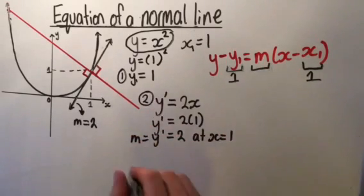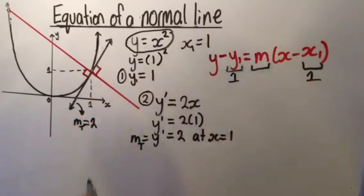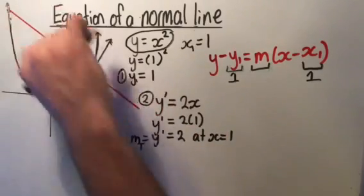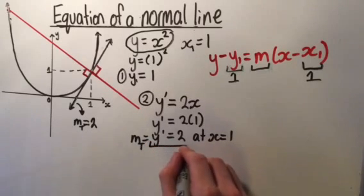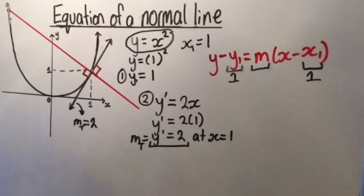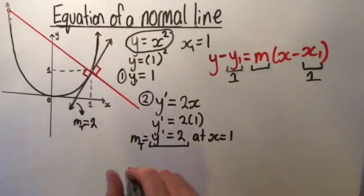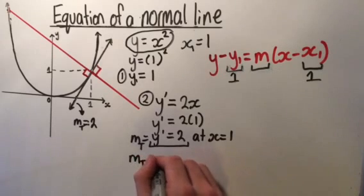But this is the gradient of the tangent, not the gradient of the normal. I would put in 2 if I were finding the equation of the tangent. But because I'm finding the equation of the normal, it has a different gradient. To find that gradient, we're going to use the gradient given by the tangent, because they meet at right angles — they are perpendicular. The gradient of the tangent equals 2.